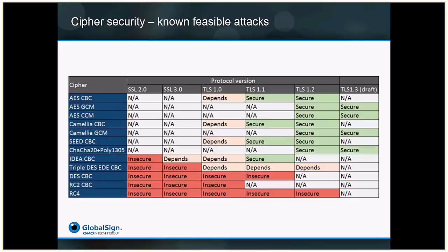The server and the browser can communicate what they support. The browser can say it supports SSL 3, TLS 1, TLS 1.1, and TLS 1.2. And the server can say it supports those protocols too, and can give preference to specific ciphers — so that when a browser or visitor visits your website, you will actually pick that secure connection.